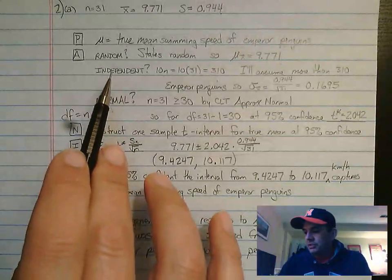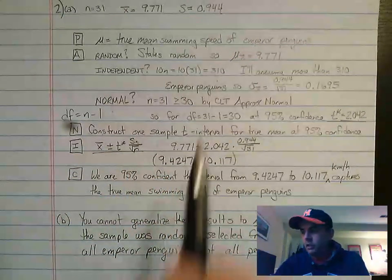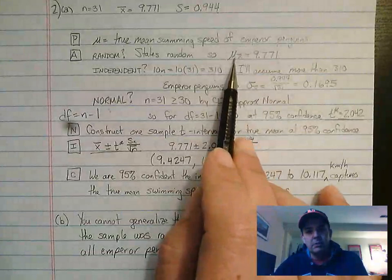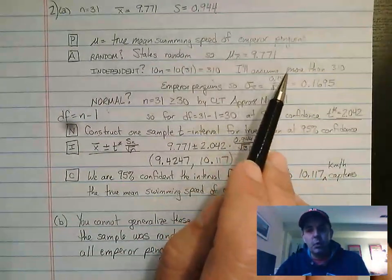A is my assumptions: random, independent, and normal. Random is the same. It states random, so we can use mu sub x bar. So the mean of our sampling distribution of means is 9.771.